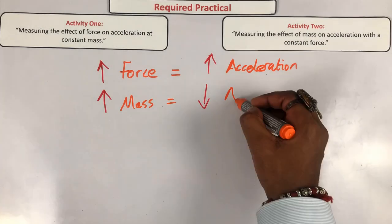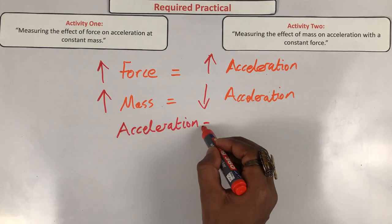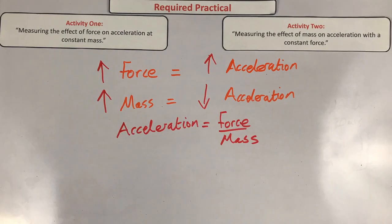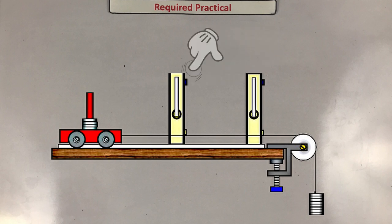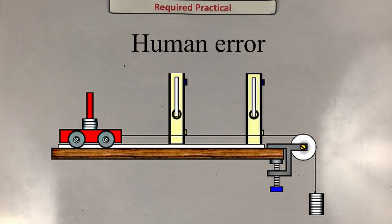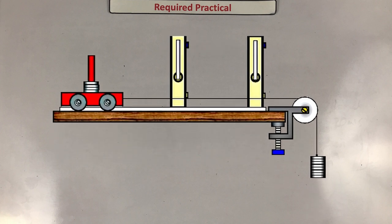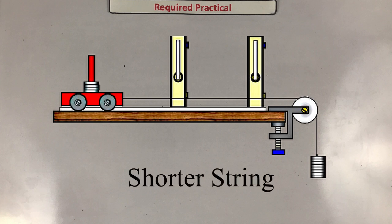One improvement to this experiment is using a data logger with light gates, which records results automatically and reduces the chance of human error. You may be asked how to prevent the weight stack from hitting the floor — you can either increase the distance of the table from the floor, or simply use a shorter string.